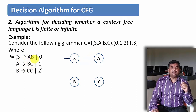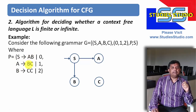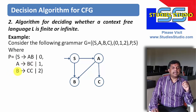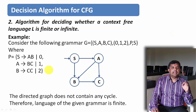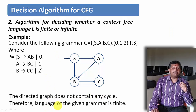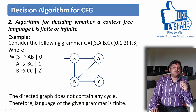S derives AB, so from S to A and from S to B there is a directed edge. Then A derives BC, so from A there is an edge to B as well as to C. Then there is a directed edge from B to C. In this directed graph it does not contain any cycle, and therefore the language of the given grammar is finite.